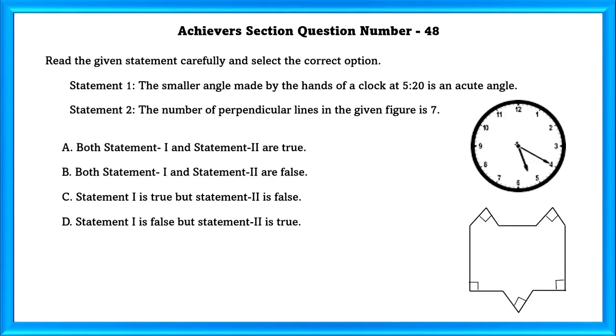Achievers Section Question Number 48: Read the given statement carefully and select the correct option. Statement 1: The smaller angle made by the hands of a clock at 5:20 is an acute angle. Statement 2: The number of perpendicular lines in the given figure is 7. Yes, the smaller hand made by the hands of the clock at 5:20 is an acute angle.